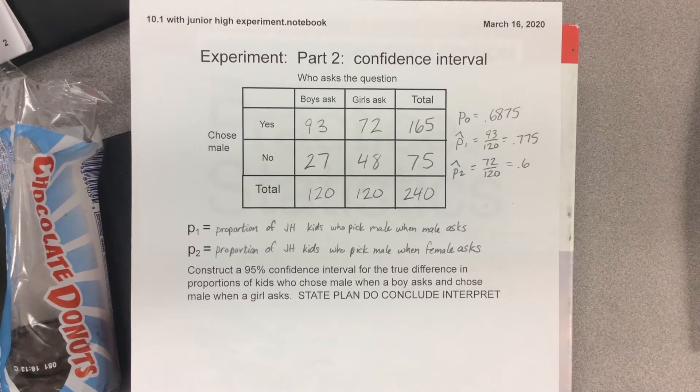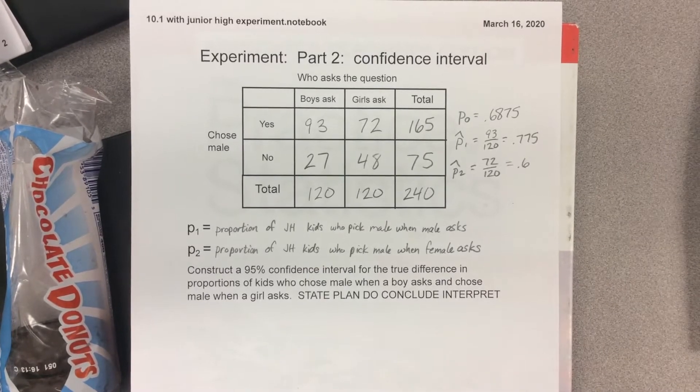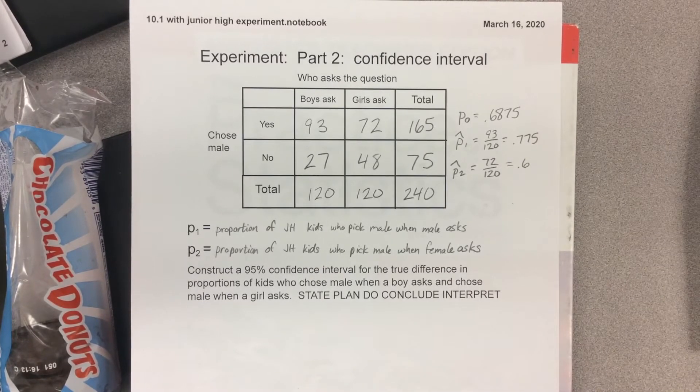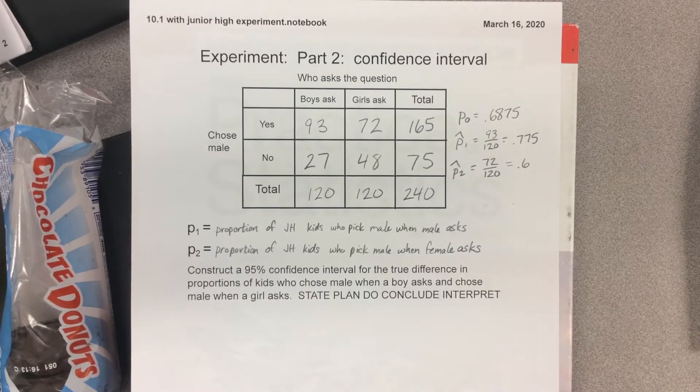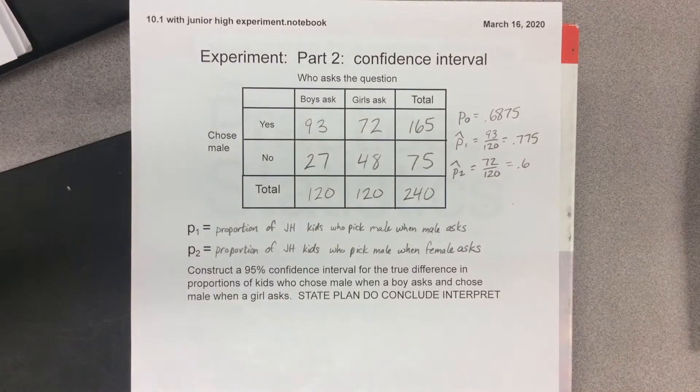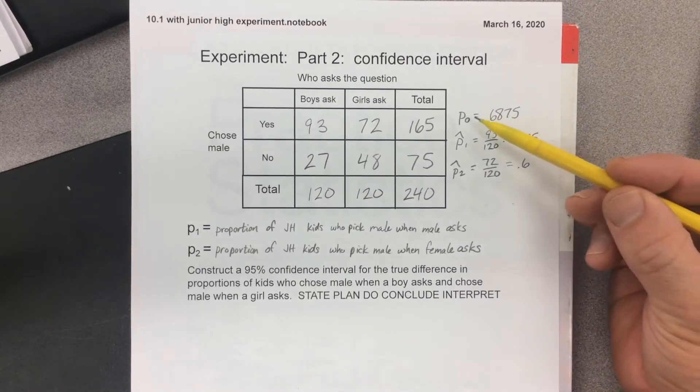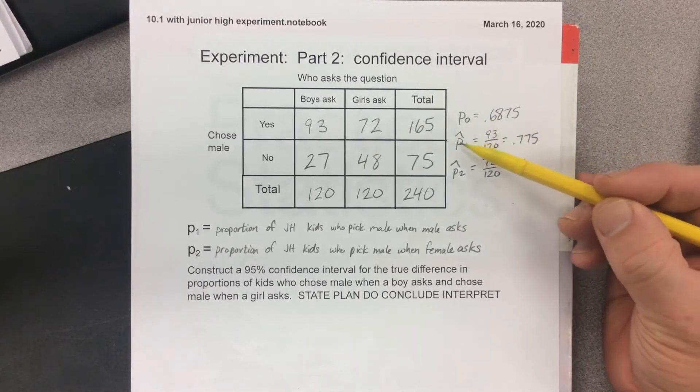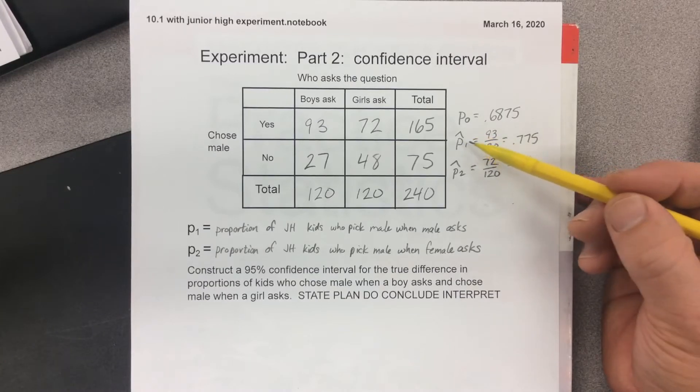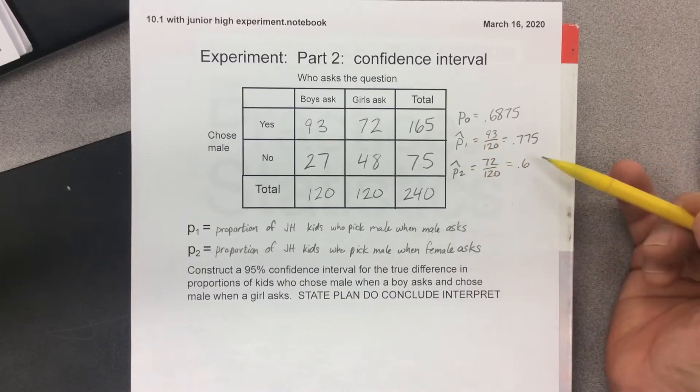We're going to start with the confidence interval. The numbers are 93, 72, 165, 27, 48, 75, 120, 120, 240. P1 is the proportion of junior high kids who pick male when male asks. P2 is the proportion of junior high kids who pick male when female asks, and I gave you the P hat for proportion 1 and proportion 2.